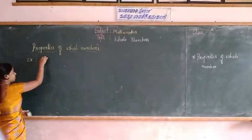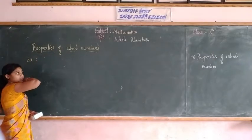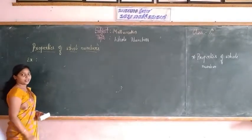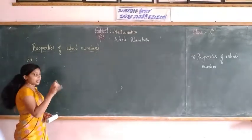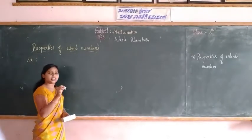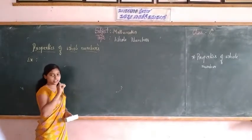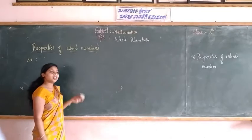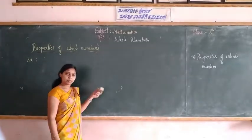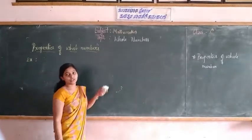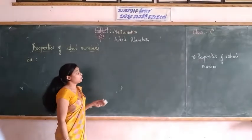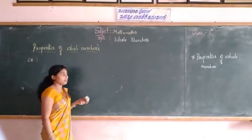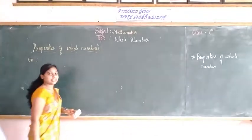This method is applied for all 4 mathematical operations: addition, subtraction, multiplication, and division. After applying all these operations, we will conclude which property is applicable to the whole numbers.